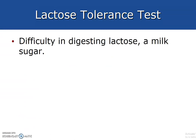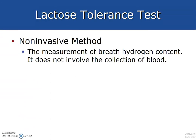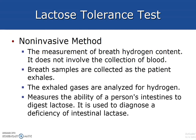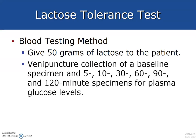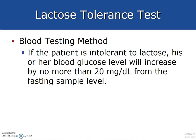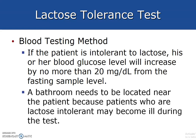Lactose tolerance test is for difficulty in digesting lactose, which is a milk sugar. The invasive method involves measurement of breath hydrogen content and does not involve blood collection — breath samples are collected as the patient exhales and the exhaled gases are analyzed for hydrogen, measuring the intestine's ability to digest lactose and diagnosing a deficiency of intestinal lactase. The blood test method requires giving the patient 50 grams of lactose, then drawing blood at 5, 10, 30, 60, 90, and 120 minutes for plasma glucose levels. If the patient is lactose intolerant, blood glucose will increase by no more than 20 milligrams from the fasting sample level. A bathroom needs to be nearby, as patients may become ill. If the patient cannot handle the lactose drink, the test is canceled and the patient is ruled positive for lactose intolerance.